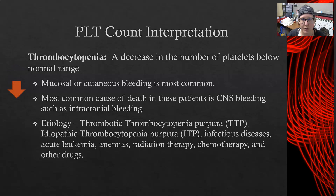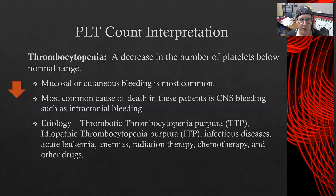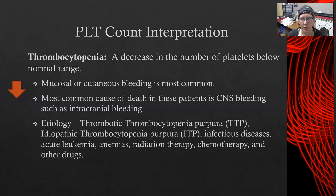Thrombocytopenia is a decrease in the number of platelets below the normal range — a low platelet count. With thrombocytopenia, you will see mucosal or continuous bleeding in the patient. The most common cause of death in these patients is bleeding in the central nervous system or in the brain — intracranial bleeding, which could present as a hemorrhagic stroke.